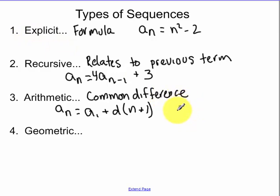In the recursive form, the Nth term, we take the previous term and we add the common difference to it.